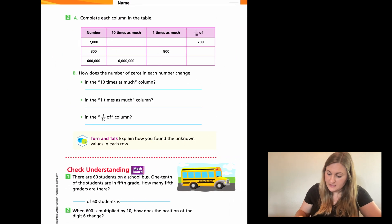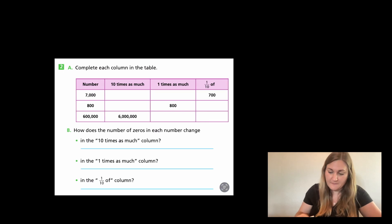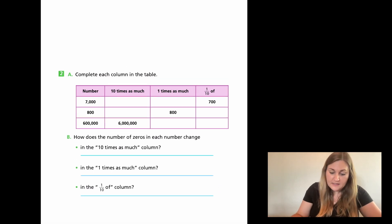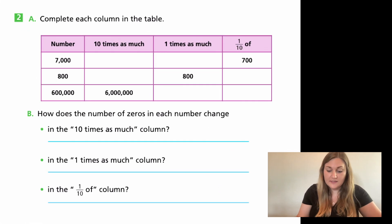Now I'm skipping over to page seven and I'd like to look at problem number two. I'm going to just go ahead and zoom up on that problem here. Now it says complete each column in the table and they give me three numbers and they want to know ten times as much, one times as much, and one tenth of the number that they gave us. I would love for you to try to fill out just this purple chart. Go ahead and pause this video right here and fill out those couple of blanks.